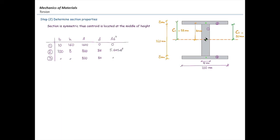Now I'm going to write down Ad squared, which is the extra term needed to calculate the moment of inertia. Then we have the moment of inertia about the centroid, or BH cubed over 12 for the rectangles. I have determined all of those values and plugged them into the equation: the sum of the moment of inertia about the centroid plus Ad squared.